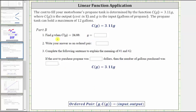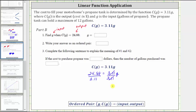For Part B, we're asked to find G, which is the input, given C of G equals 24.88, which is the output. To find G, we substitute 24.88 for the function value C of G. Going back to our function rule, we have the equation 24.88 equals 3.11G. To solve for G, we divide both sides by 3.11. 3.11 divided by itself equals one, so we have G equals 24.88 divided by 3.11, which equals eight. As an ordered pair, we have eight comma 24.88.